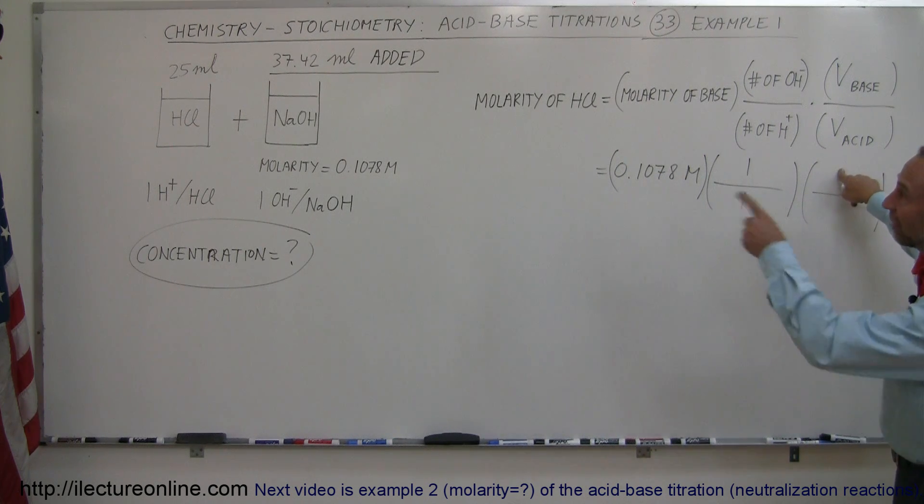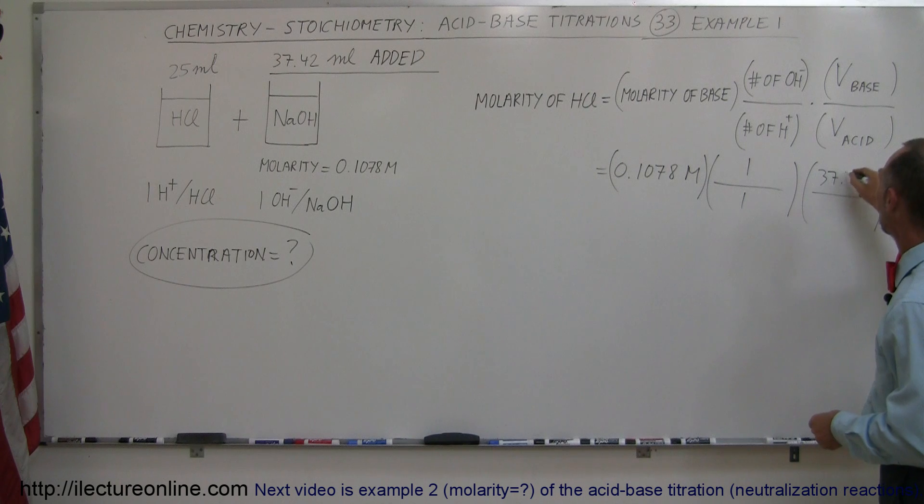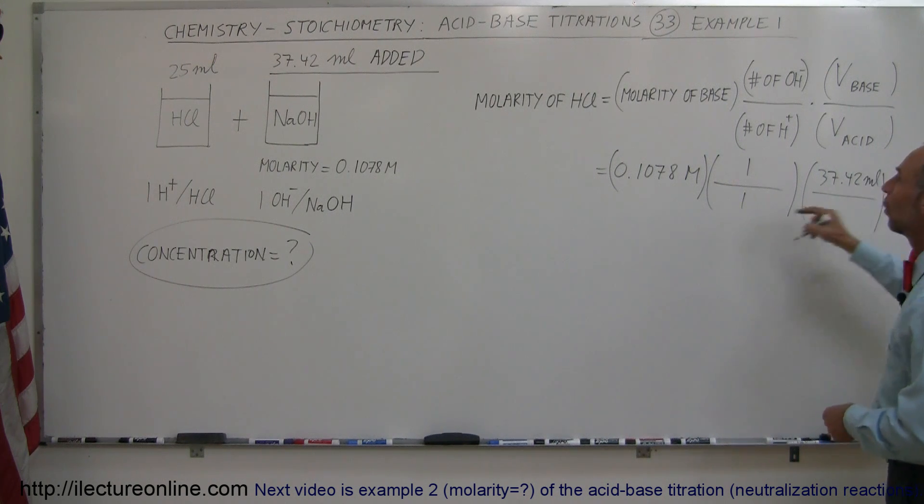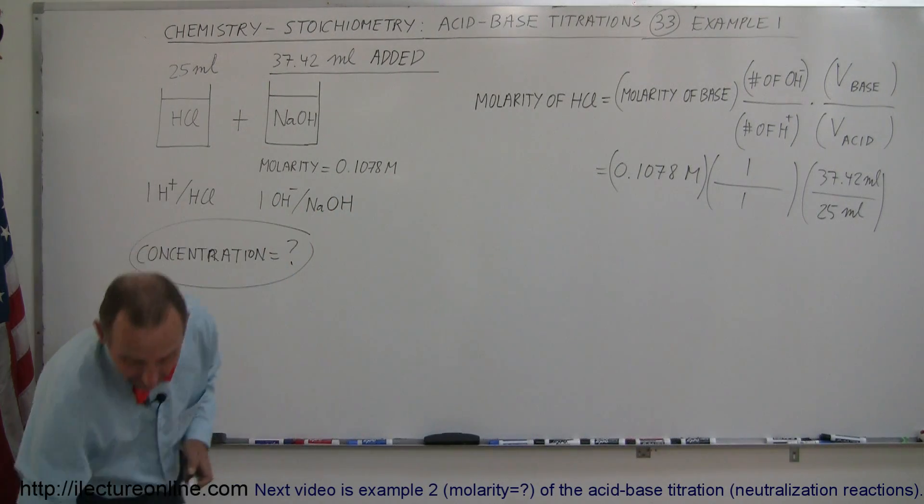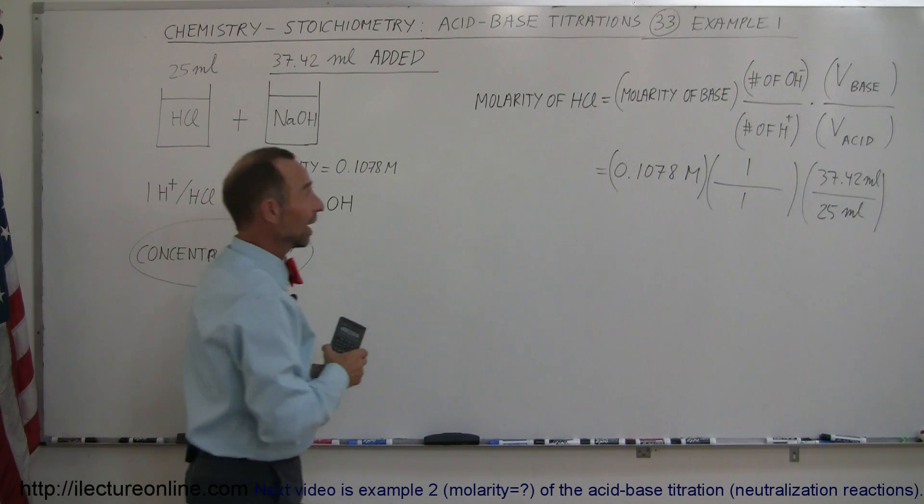So, what is the volume of the base? It's 37.42 milliliters. What is the volume of the unknown sample? 25 milliliters. And now, we're ready with a calculator to figure out the concentration of the hydrochloric acid.